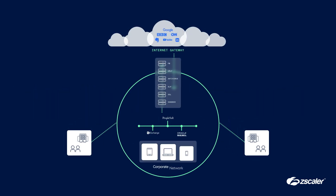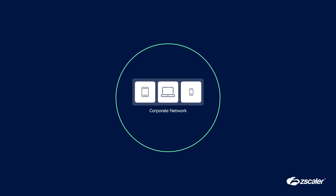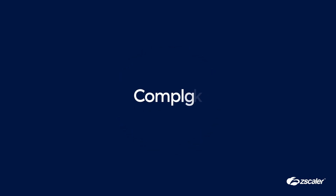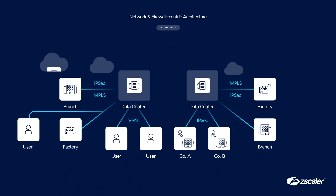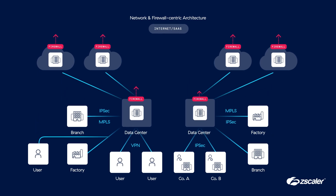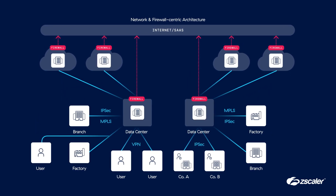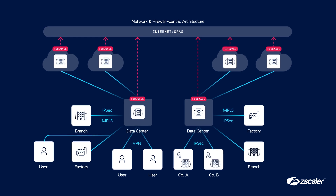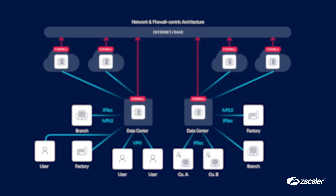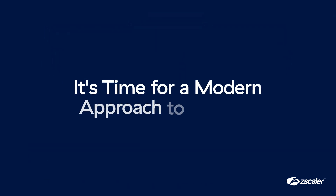Because these solutions route all traffic through the network, it's slow for users, complex to manage, and can't provide the same level of security at scale. To make matters worse, inspecting encrypted traffic can significantly slow down performance and hurt productivity. We're not in 2010 anymore, and today it's time for a modern approach to security.